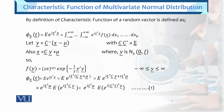The moment generating function cannot be found for every probability distribution — it cannot be determined. But the characteristics function can be determined for every probability density function. By definition, the characteristic function of a random vector is defined as Psi of X, T — this is the notation. By definition, it equals the expected value of exponential iota T prime X.